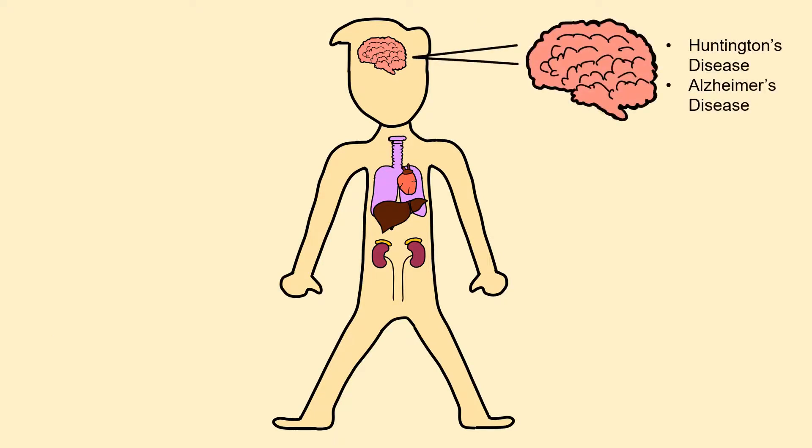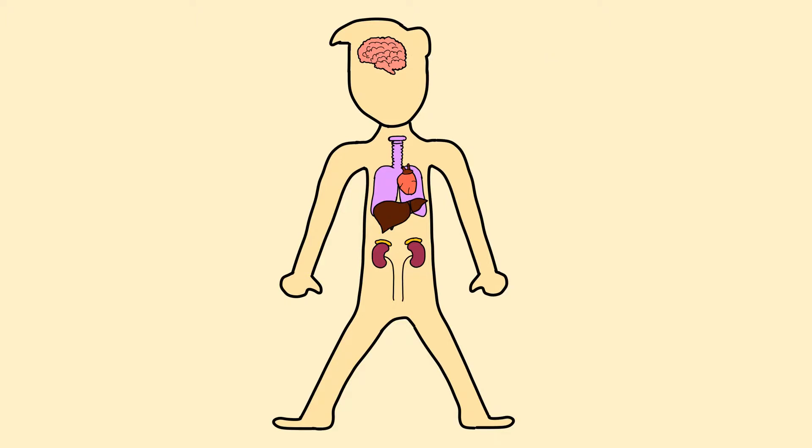Therapies currently in clinical trials include the treatment of neurological diseases such as Huntington's and Alzheimer's disease, cardiovascular diseases, diseases in the liver such as hepatitis B and C, multiple types of cancers such as lung cancer and endocrine diseases such as chronic renal disease.